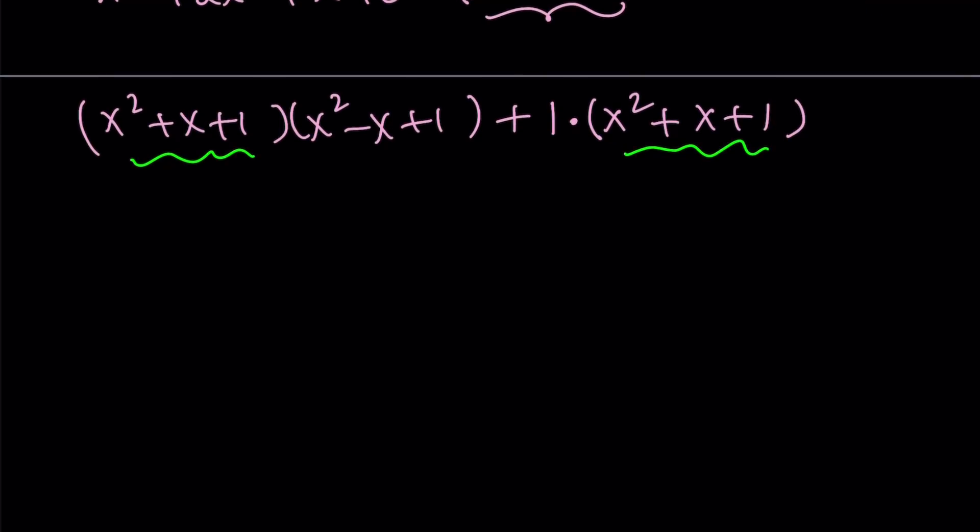So, the whole idea is break it down in a factorable way. And now, we have x squared plus x plus 1 multiply by x squared minus x plus 1 plus 1. That is going to give us a plus 2 here. Therefore, we were able to factor this quartic equation into two quadratics.